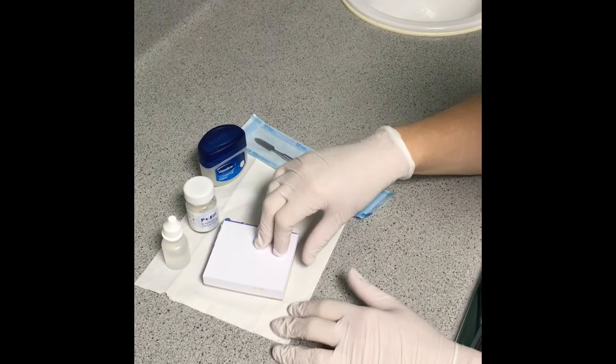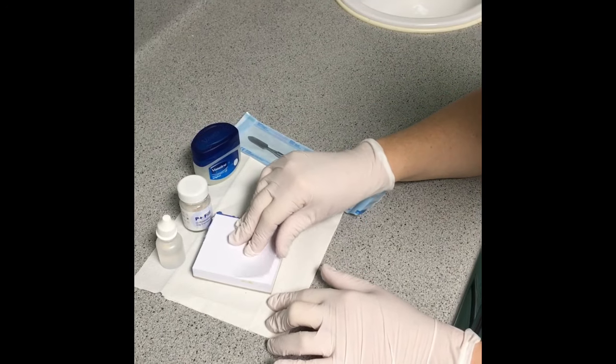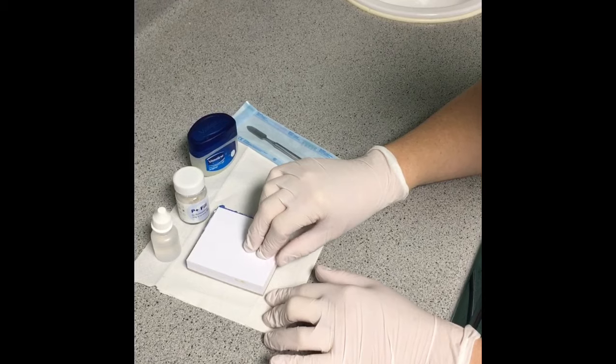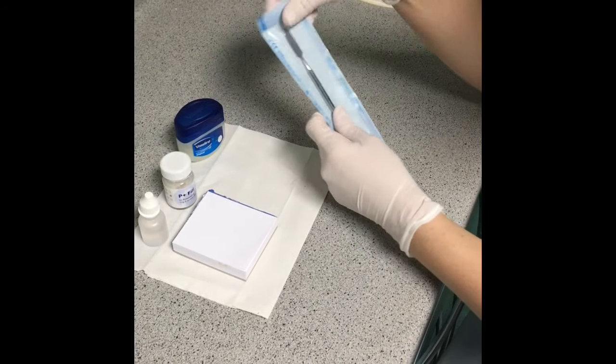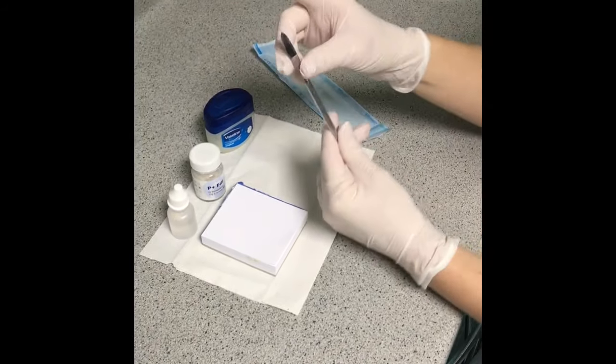or a glass slab. I normally prefer a glass slab, but with the pad you can just take it off and put it in the bin afterwards. You need a spatula. With the spatula, first of all, you mix with the pointy end and then the flat end is for segregating the powder.